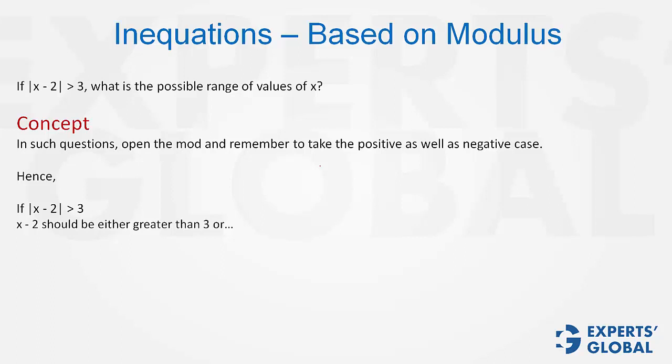Imagine if x minus 2 is equal to negative 4, mod of negative 4 becomes 4, which is greater than 3. So the second case is very important that x minus 2 may be less than minus 3.